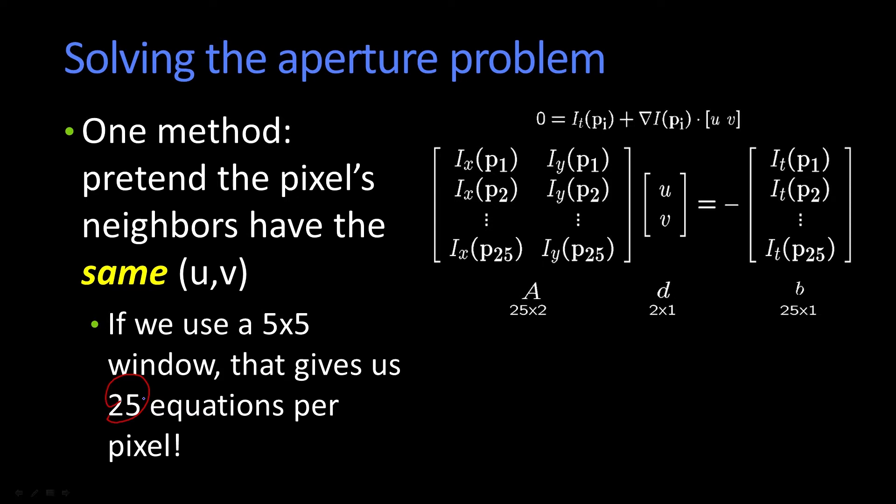And here they are. So what we've got here is our U and V that we're assuming is the UV of some center pixel. And here we have 25 rows of the derivative in x and the derivative in y at each of those 25 points. And these are the gradients dotted with UV equals the negative,